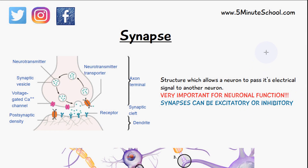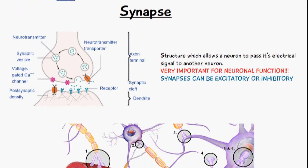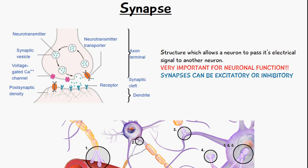In today's video we're going to be talking about the synapse. The synapse is a structure which allows a neuron to pass its electrical signal onto another neuron, which is very important for neuronal function. It allows for the progression of a nerve impulse from one place to the other. The important thing you need to know is that a synapse helps neurons transfer impulses from one to the other.